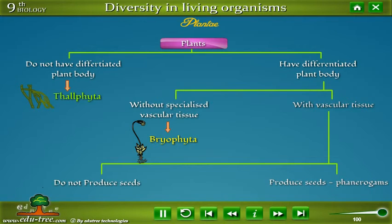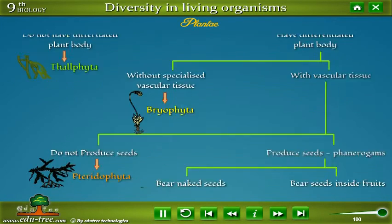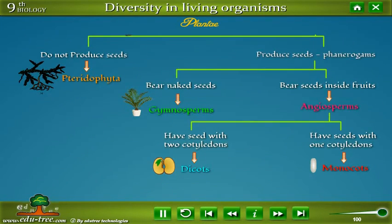This category is again further subclassified as plants which do not produce seeds, for example Pteridophyta, and plants which produce seeds, also called Phanerogams.